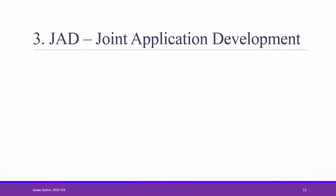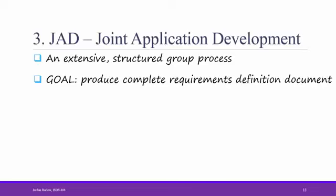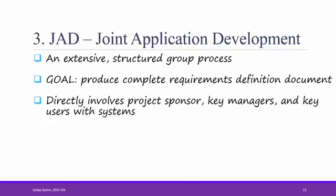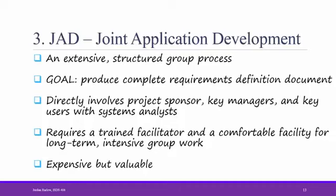The third technique for gathering systems requirements is JAD, Joint Application Development. JAD is also sometimes referred to as Joint Application Design. JAD is an extensive structured group process. The goal is to complete requirements definition document as a group. You directly involve the project sponsor, key managers, and key users with the systems analyst. All of these people come together in one session. Ideally, a JAD session should have a trained facilitator and a comfortable facility for long-term intensive group work. JAD is expensive but valuable. You can run into some typical group work issues such as groupthink, people being hesitant to share opinions, or a lack of consensus when people want to stick to their individual preferences.